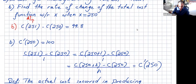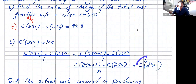These numbers are so close because if you write C(251) − C(250) divided by 1, and change the notation to C(250 + h) − C(250) over h with h = 1, this is exactly the definition of the derivative — C′(250). So whenever you hear marginal cost, marginal revenue, or marginal profit, just take the derivative and plug in the number.